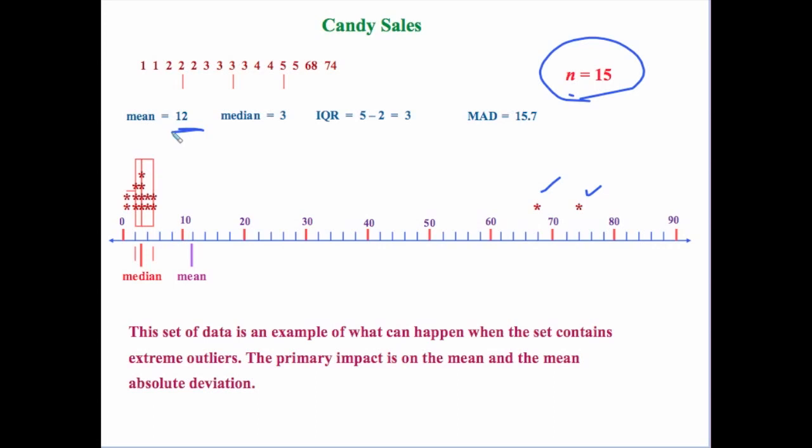But again, it's the distance from the mean, not from the median. So in cases where you have extreme outliers, it really can make a big difference on some of your values, especially again on your mean and your mean absolute deviation.